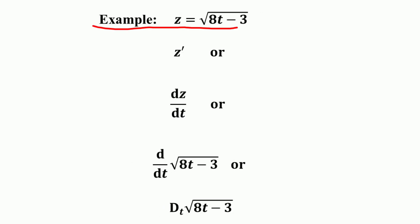Take this example: if z is equal to √(8t - 3), then the derivative can be expressed as z', dz/dt, d/dt √(8t - 3), or Dₜ(√(8t - 3)).